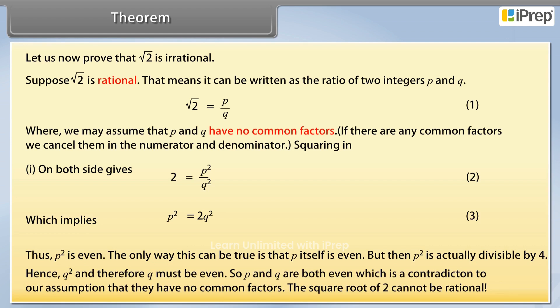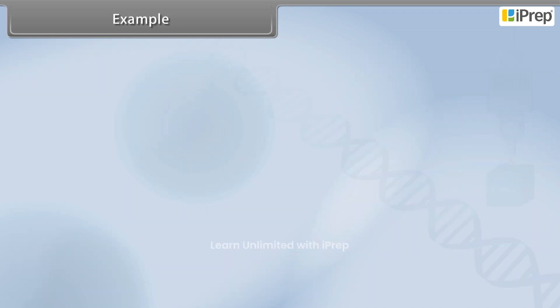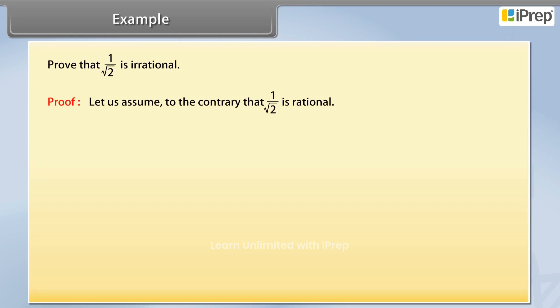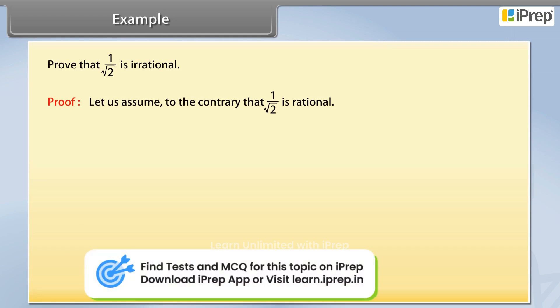Therefore, the square root of 2 cannot be rational. Example: let us now prove that 1 upon square root 2 is irrational. Proof: let us assume to the contrary that 1 upon square root 2 is rational.